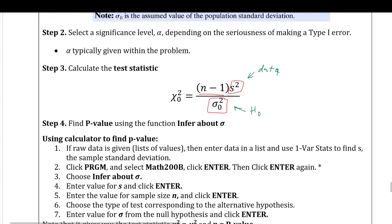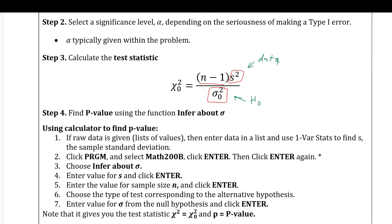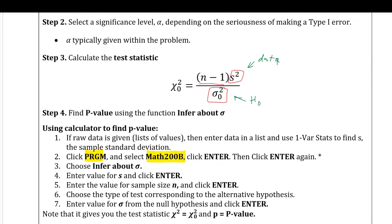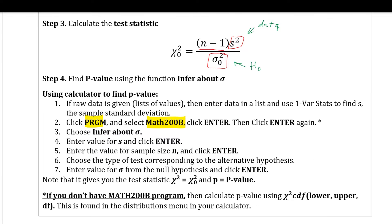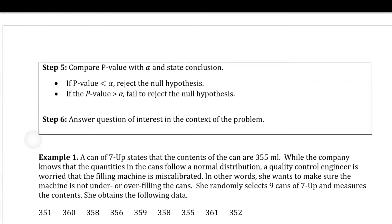Now, your calculator has no built-in test for the population standard deviation. If you were in my class, I would give you a program called Math 200b to transfer to your calculator. There is a workaround: you can use chi-squared CDF on your calculator to calculate the p-value, but the test statistic itself you'll have to do by hand. Step five, make a decision by comparing the p-value to alpha. Step six, write a conclusion statement.